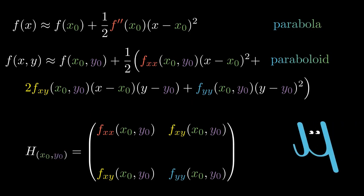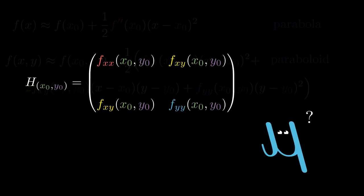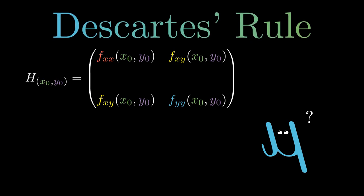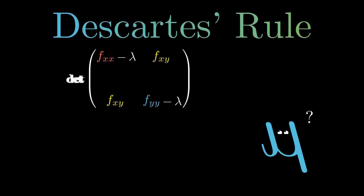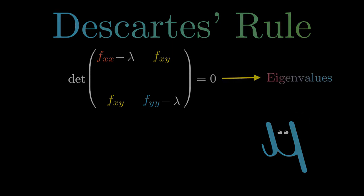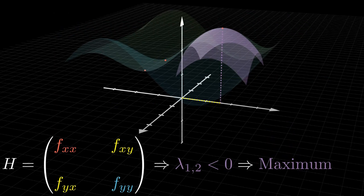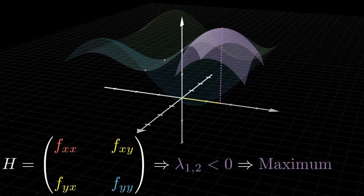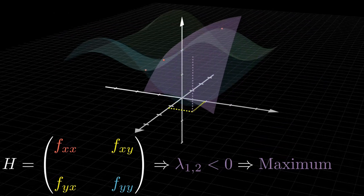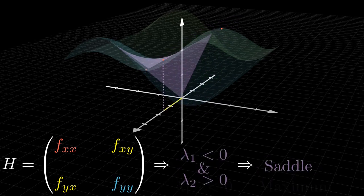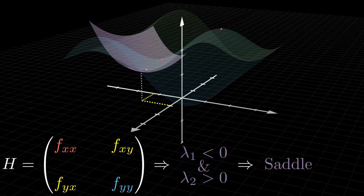But again, how do we do this? Well, let's apply what is called Descartes' rule, which allows us to find the sign of the matrix through the sign of its eigenvalues. In fact, from this rule we learn that if both eigenvalues are negative, we are dealing with a maximum point, if they are positive and negative, with a saddle, and if both are positive, with a minimum.